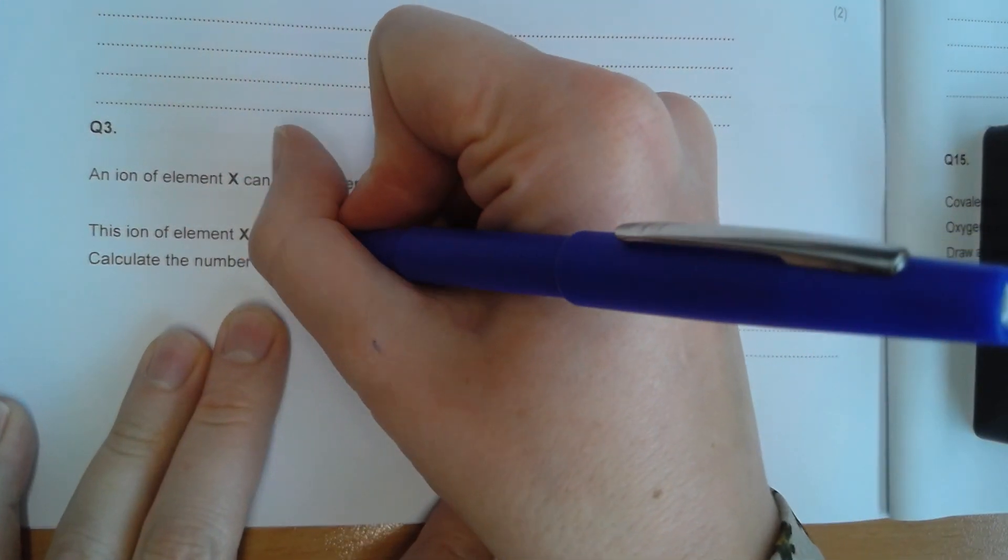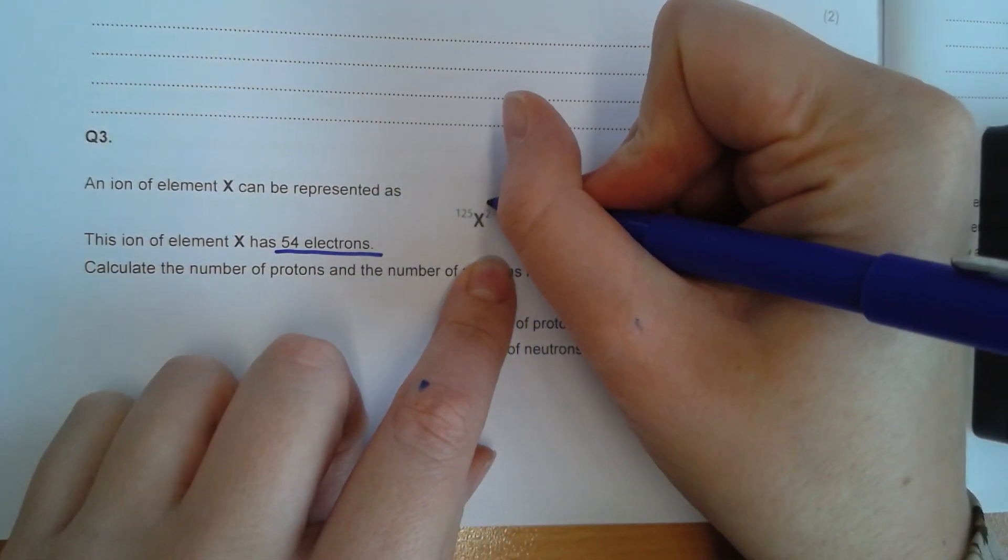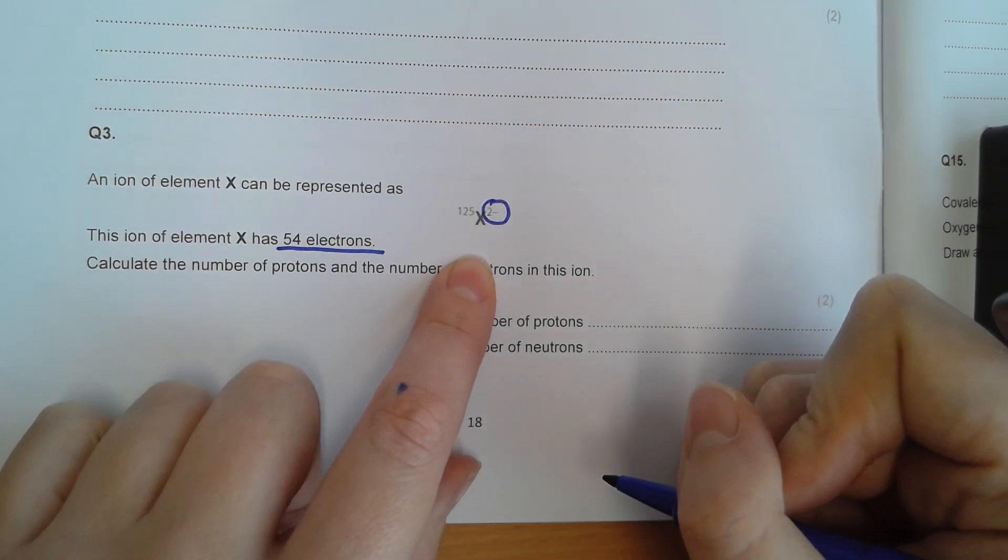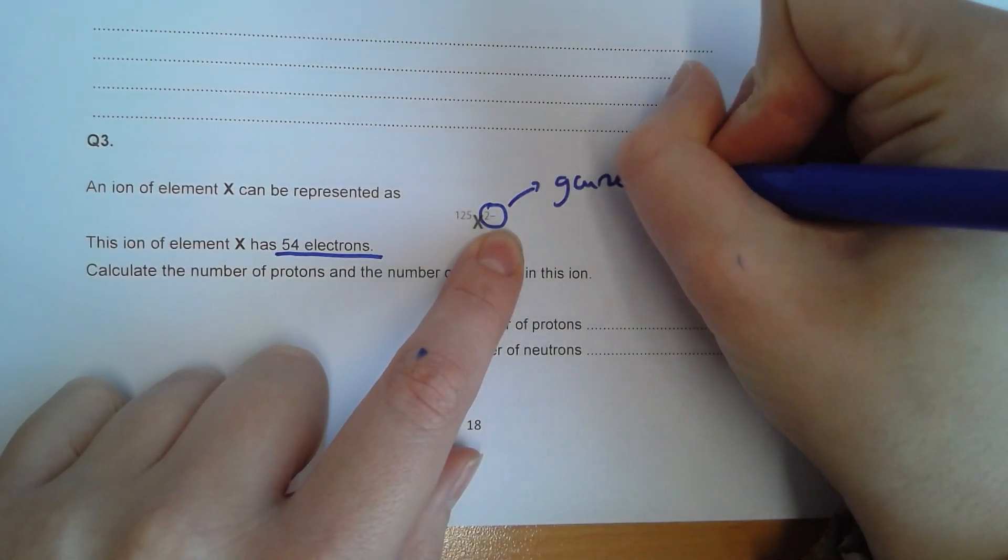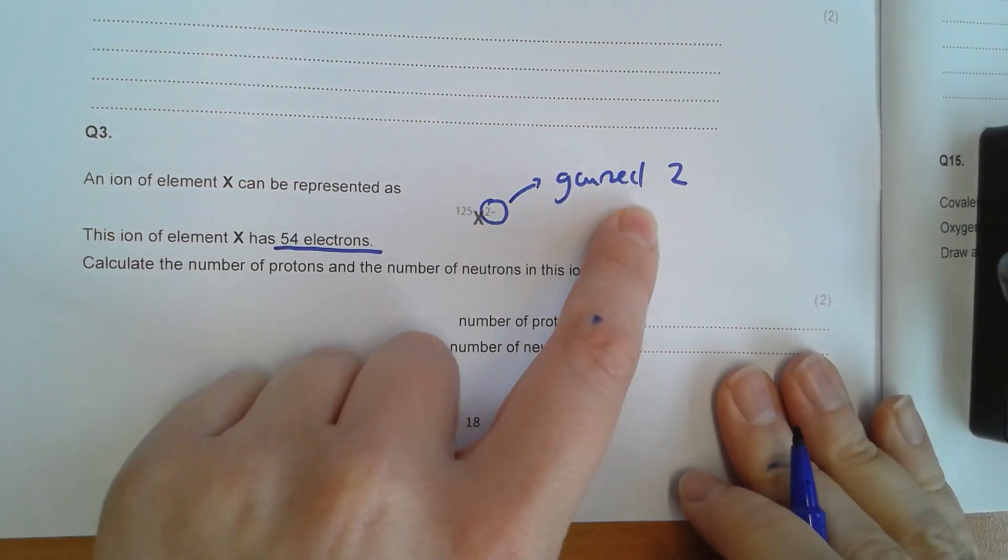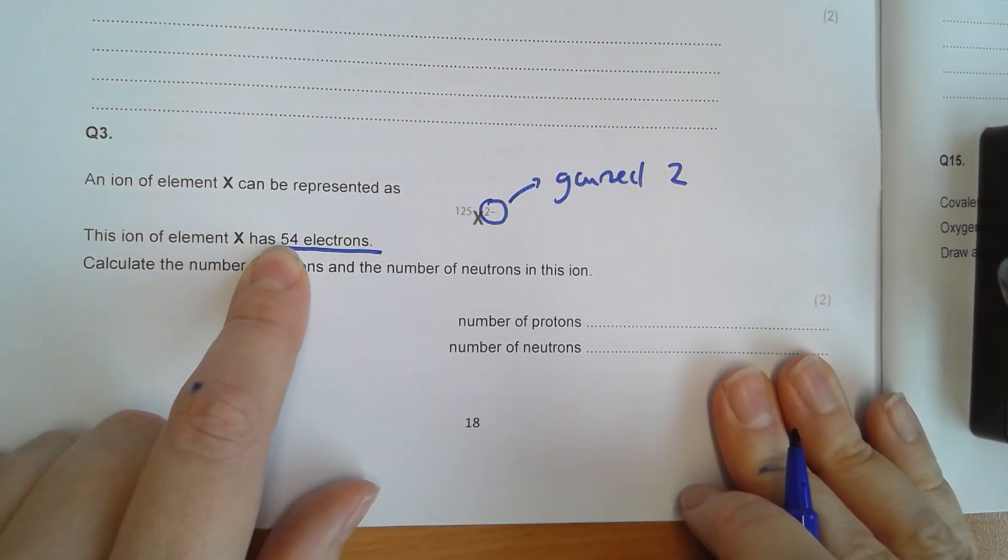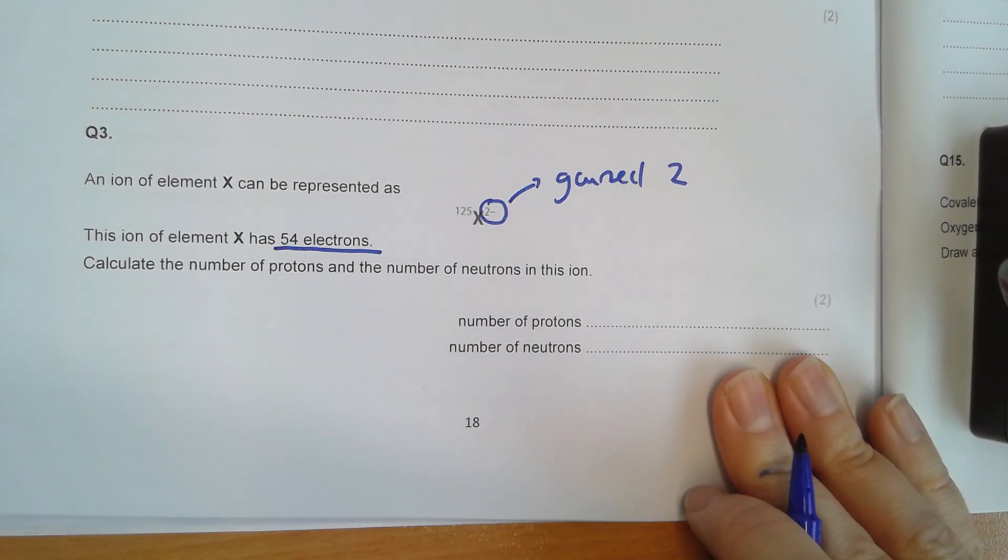So the ion has 54 electrons. The ion has a two minus charge. Two minus means it's gained two. So after gaining two electrons, it has 54. How many did it have initially? 52.